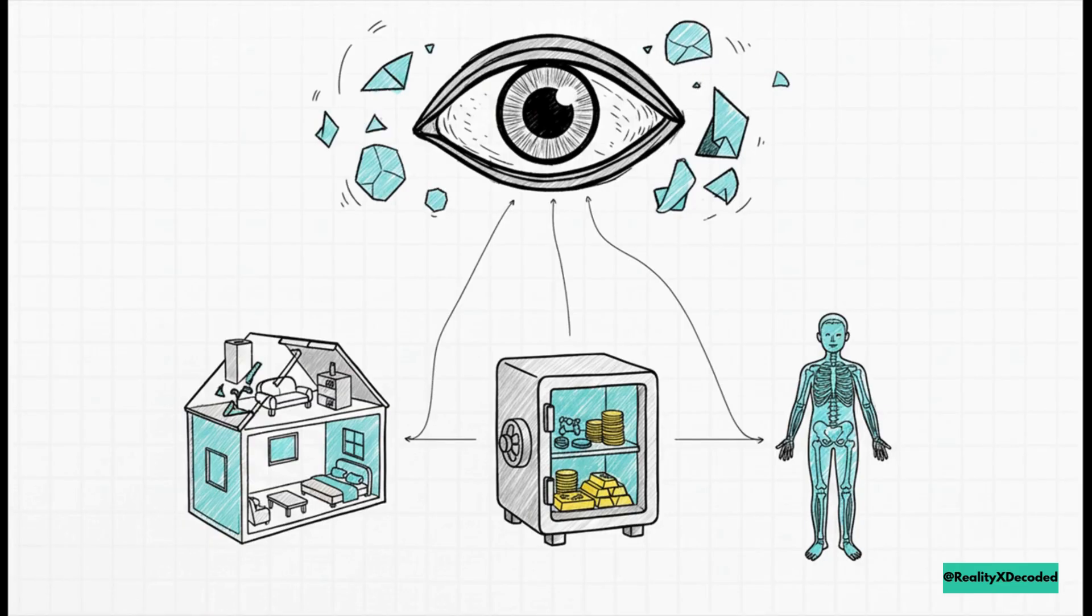Just like we can look down on a 2D drawing and see all the rooms of a blueprint at once, a 4D creature could look at us and see inside our bodies, inside our houses, inside a locked safe, all at the exact same time.